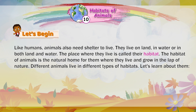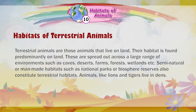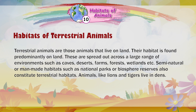Habitats of terrestrial animals: Terrestrial animals are those animals that live on land. Their habitat is found predominantly on land. These are spread out across a large range of environments such as caves, deserts, farms, forests, wetlands, etc. Semi-natural or man-made habitats such as national parks or biosphere reserves also constitute terrestrial habitats.